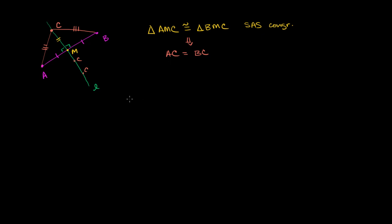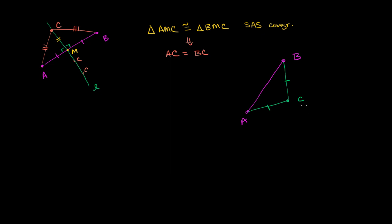Now let's go the other way around. Let's say we find some point that is equidistant from A and B. Let's prove that it has to sit on the perpendicular bisector. So this is my A, this is my B. And let's draw out some point — we'll call it C again, right down here. We're going to start with the assumption that C is equidistant from A and B, so CA is going to be equal to CB. And what we want to prove is that C sits on the perpendicular bisector of AB.